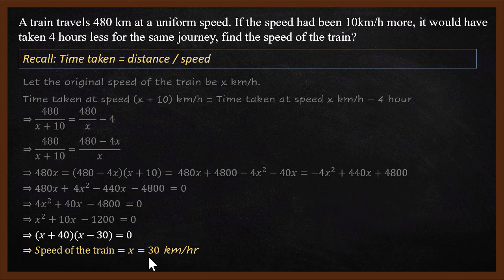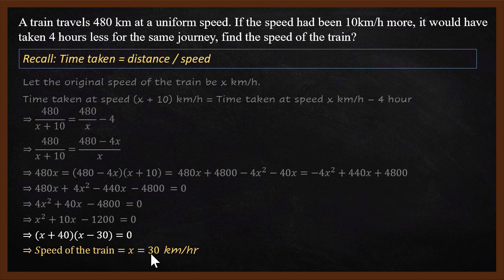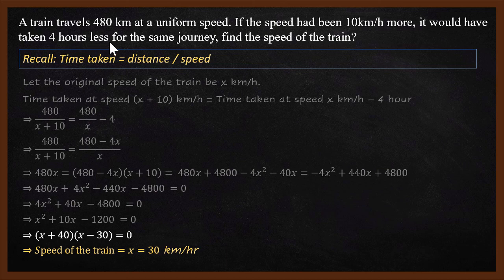Let's verify: 480 km at 30 km per hour takes 480 divided by 30 equals 16 hours. At 40 km per hour, 480 divided by 40 equals 12 hours. The difference is 4 hours less, which is exactly what the problem stated. The answer is confirmed correct.